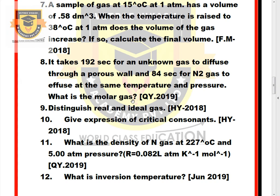Question 8: It takes 192 seconds for an unknown gas to diffuse through a porous wall and 84 seconds for N₂ gas to effuse at the same temperature and pressure. What is the molar mass of the unknown gas? Question 9: Distinguish real and ideal gas. Question 10: Expression of critical constants. Question 11: What is the density of N₂ gas at 227 degrees Celsius and 5 atm pressure?